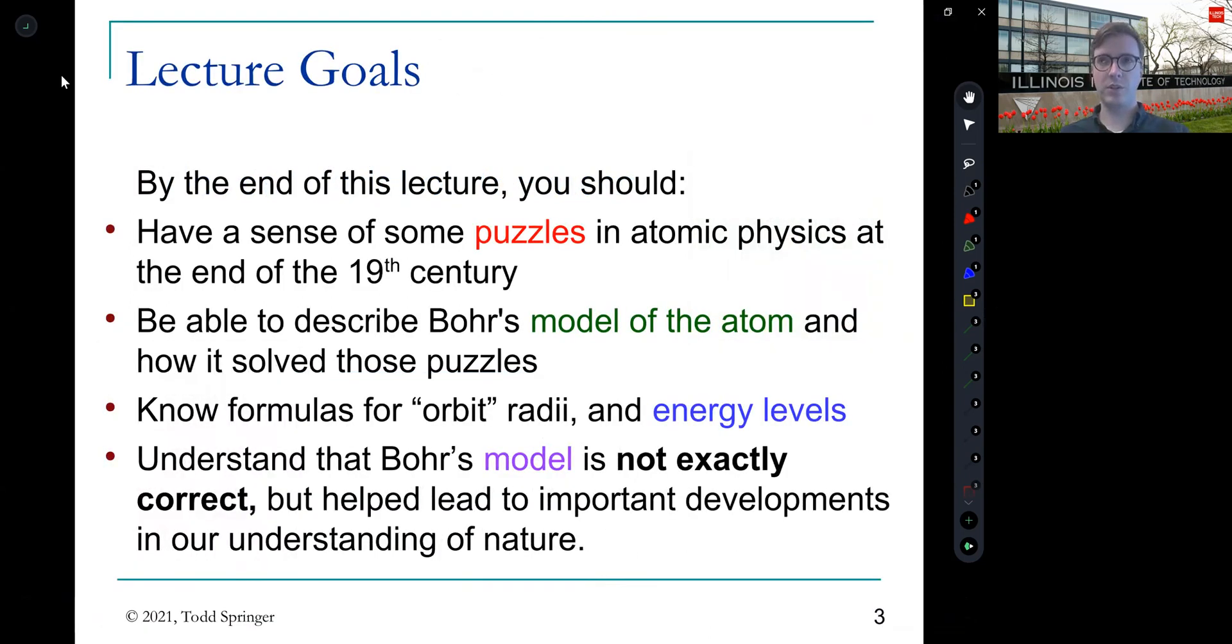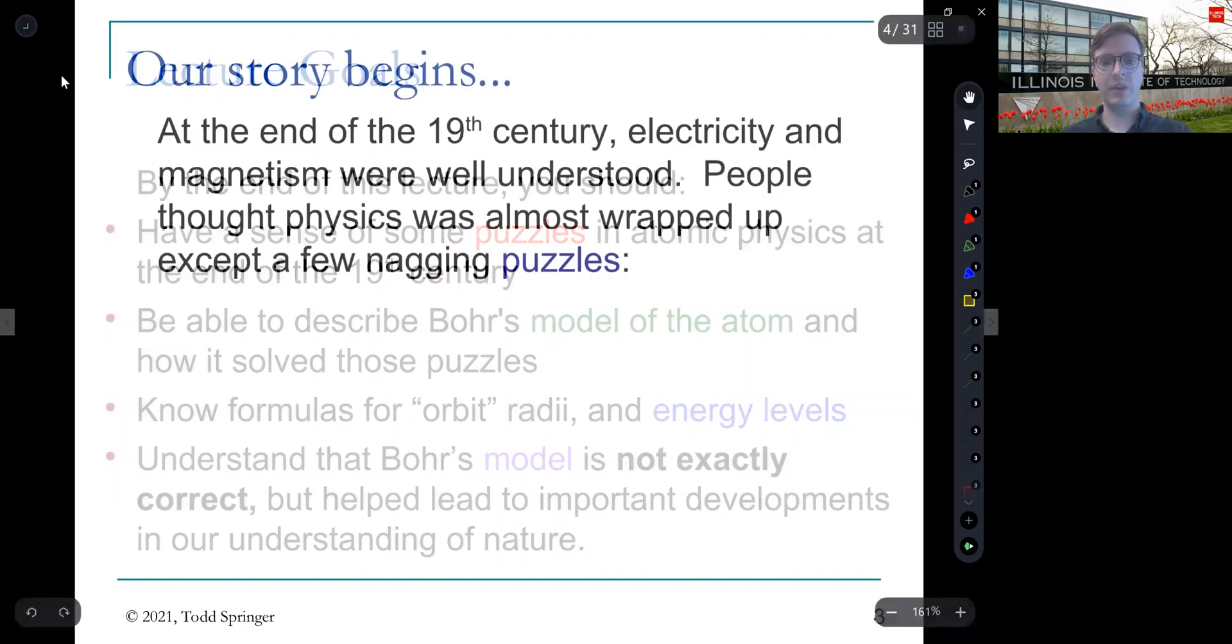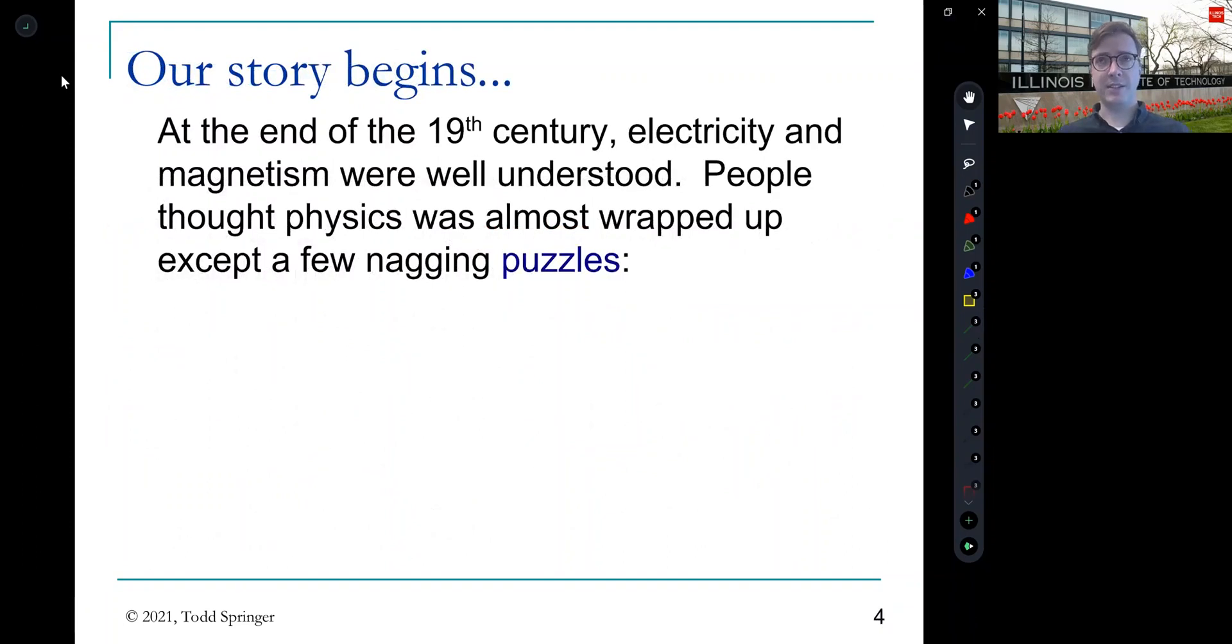So what I want to do is go back in time to the end of the 19th century and have a sense of the historical context of the way that atoms were understood at that time and how Bohr was able to solve some problems by his model of the atom. And we'll understand some of the predictions that his model makes, and then we'll eventually learn that his model is not exactly correct and what steps we need to take to make it more physically correct.